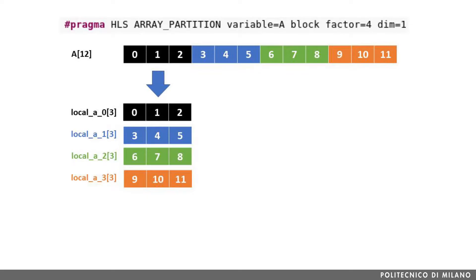We already discussed in detail how cyclic partitioning works. Let's also look at the other two partitioning schemes offered by Vivado HLS, namely block and complete partitioning. Starting with block partitioning first: the idea is to split the array into f contiguous chunks, where f is the partitioning factor. Here we are considering an array A with 12 elements that is block partitioned into 4 partitions.